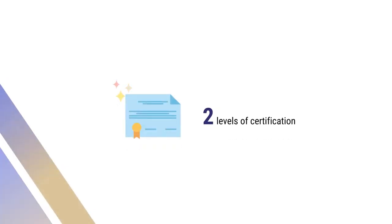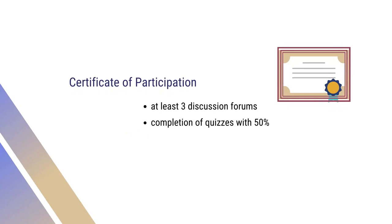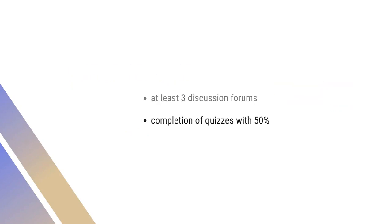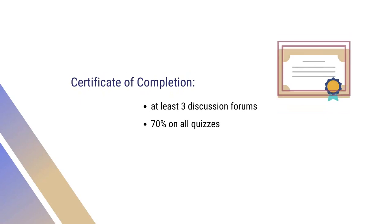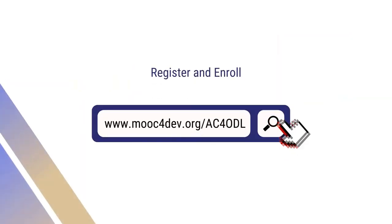There will be 2 levels of certification available based on your level of participation and completion of tasks and activities assigned during the learning. Certificate of Participation requires participation in at least 3 discussion forums and completion of quizzes with 50%. Certificate of Completion requires 70% on all quizzes and participation in at least 3 discussion forums. To register and enroll in this MOOC, please go to the link provided on the screen.